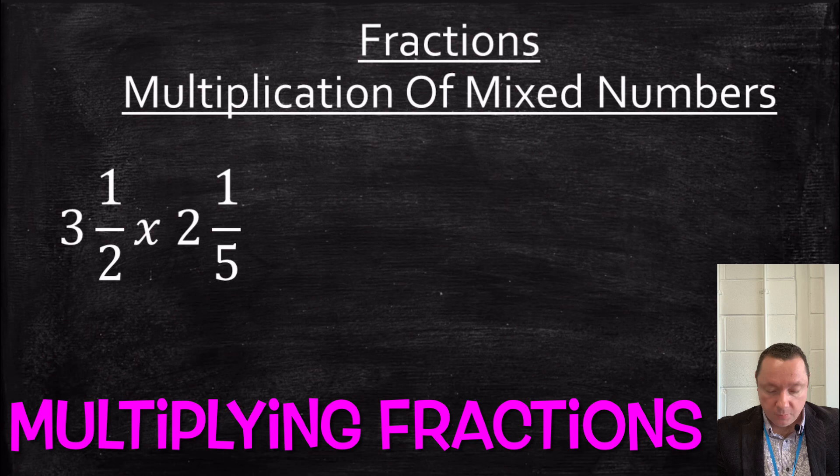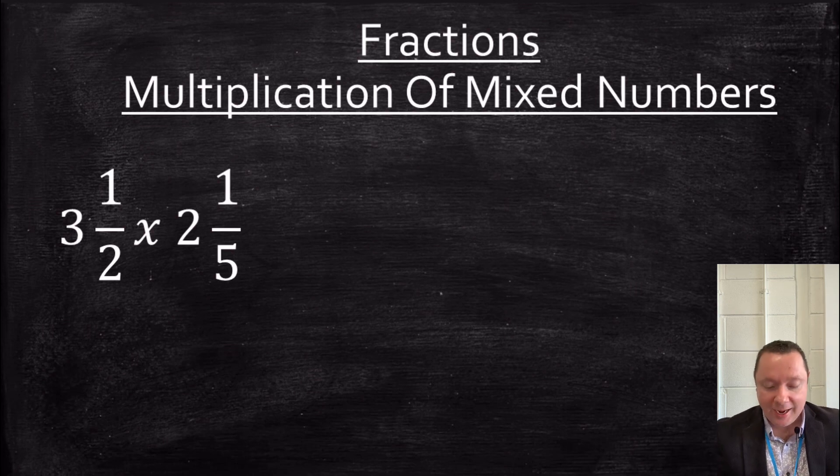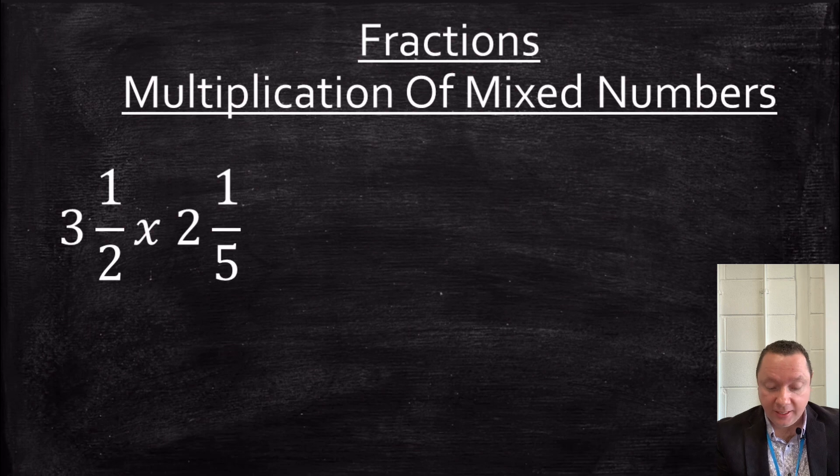OK, let's multiply some mixed numbers. When you've got 3 and a half times 2 and a fifth there. Now, common mistake here, don't make it. You cannot do 3 times 2 and a half times a fifth because you've missed some of the sums because you've not been done 3 times, say, a fifth, or you've not done 2 times a half.